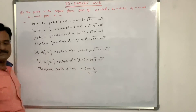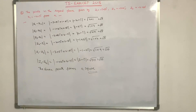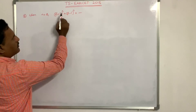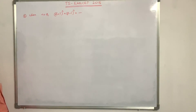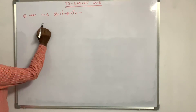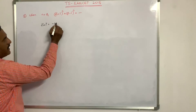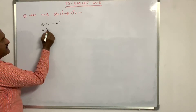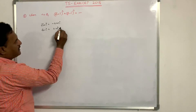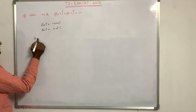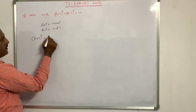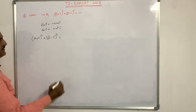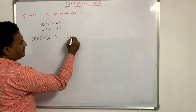Fourth problem: when n equals 8, find (root 3 plus i) to the power n plus (root 3 minus i) to the power n. Given that root 3 plus i equals minus 2 omega i, and root 3 minus i equals 2 omega squared i, using cube roots of unity. Substituting n equals 8 into the expression.